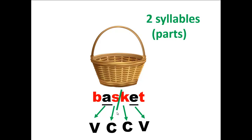So you divide the word between the consonants. The first syllable is going to be BASS and the second syllable would be KIT. So it's going to be BASS-KIT. The word is made up of two parts: the first part or syllable is BASS, the second part is KIT.